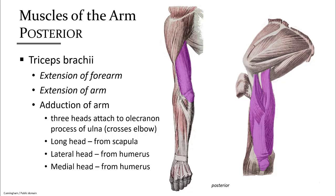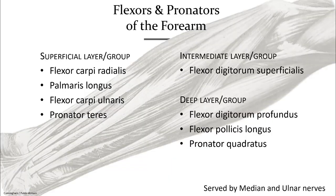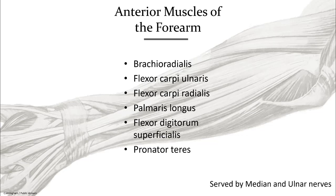The triceps brachii on the posterior side of the arm will extend the arm at the shoulder as well as extend the forearm at the elbow. It does these two functions because it crosses both joints. There are many muscles in the anterior forearm, collectively known as the flexors and pronators, served by the median and ulnar nerves. We will focus on six muscles to give a general idea about the movements of the forearm, wrist, hand, and fingers.